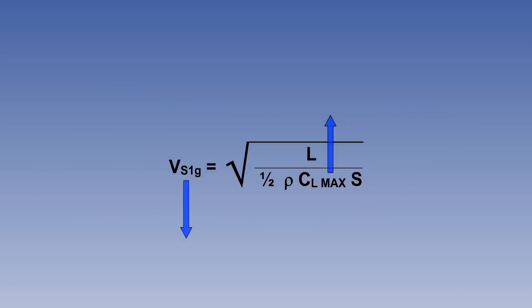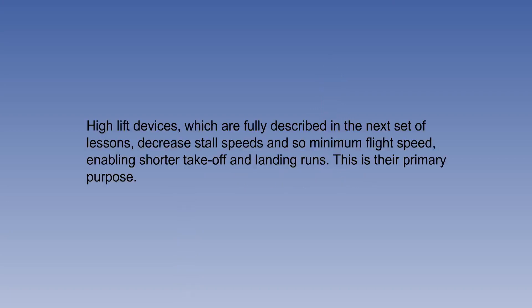From the 1G stall formula, it can be seen that an increase in CL max will reduce the stalling speed. It is possible with modern high-lift devices to increase the CL max by up to 100%. High-lift devices, which are fully described in the next set of lessons, decrease stall speeds and so minimum flight speed, enabling shorter take-off and landing runs.